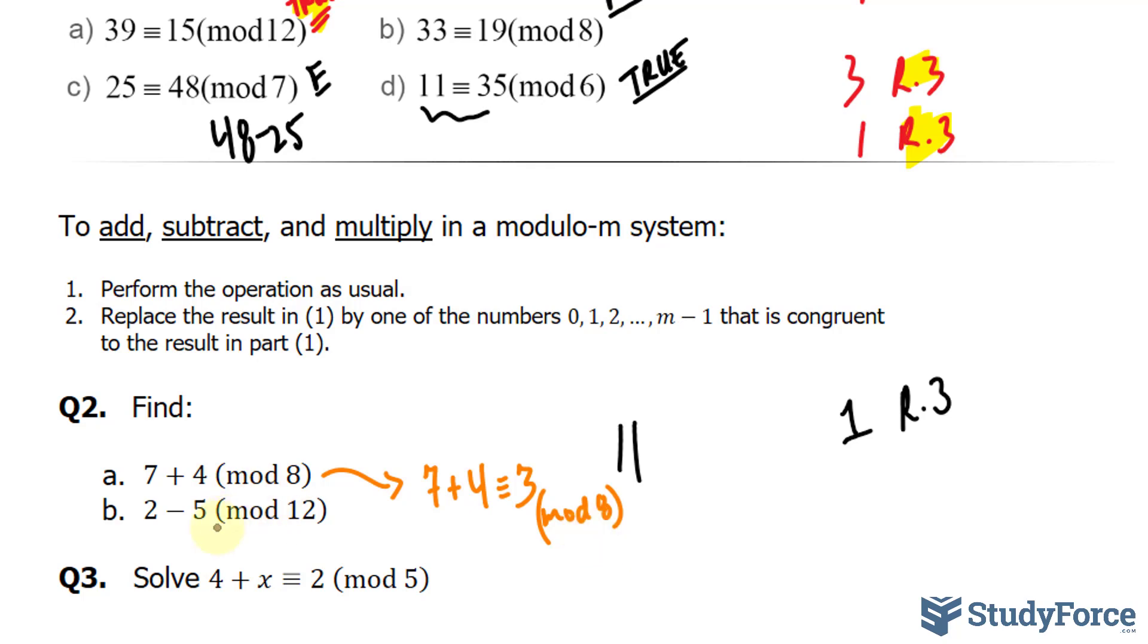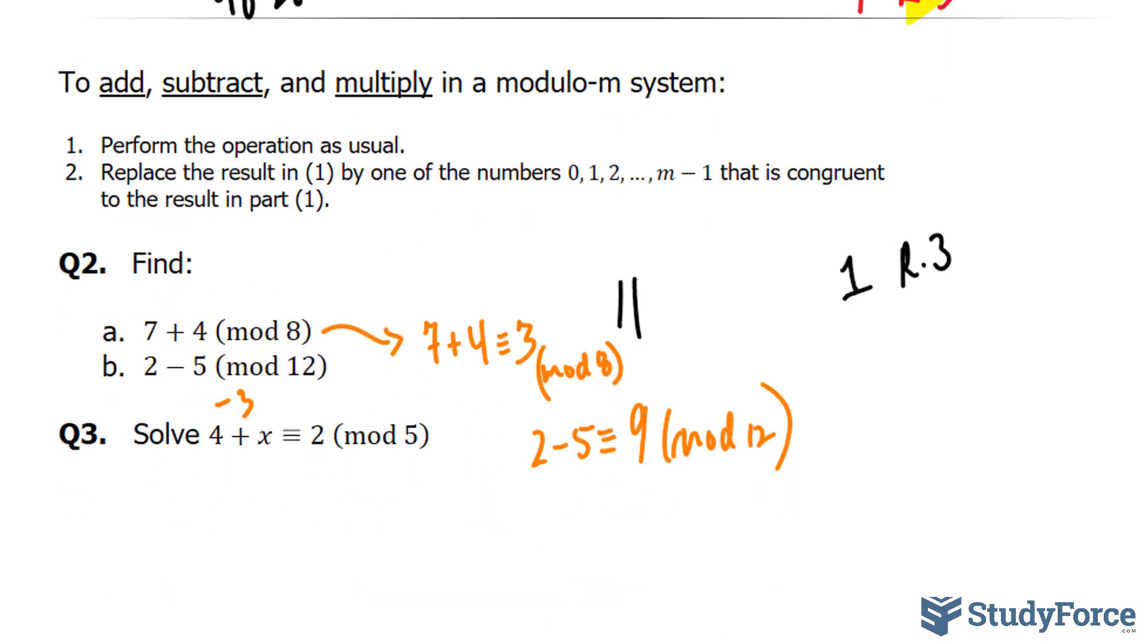What about 2 minus 5? And the modulus is 12. 2 minus 5 is negative 3. Remember, when the modulus is 12, the maximum number is 11. So counting from 0 backwards, we get 11, 10, 9. Now because 9 is within the values between 0 and 11, all we have to do is write down 2 minus 5 is congruent with 9 in the mod 12 system. Notice that we couldn't make 7 plus 4 congruent with 11, because 11 exceeded 8 in the previous example.